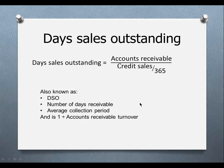This is called the average collection period. If you have credit terms of, say, net 30, you would expect that the days sales outstanding would be close to 30. You wouldn't expect it to be under 30 because there will be delinquent accounts, so hopefully it's in the neighborhood of 30 and deviations would need to be explored. Days sales outstanding is the inverse of the accounts receivable turnover.